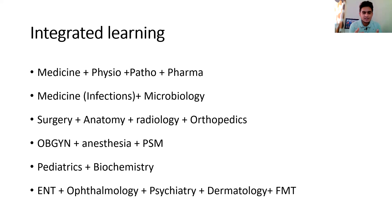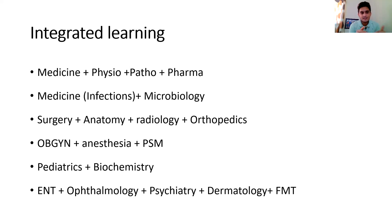Some subjects don't complement each other but are grouped together. One group is Obstetrics and Gynecology combined with Anesthesia, and Preventive and Social Medicine with Public Health. Another group combines Pediatrics with Biochemistry — this may seem like a weird combination, but there is a good overlap between metabolic and genetic diseases in Pediatrics and Biochemistry. Genetics also has an important role in Pediatrics. The last group — ENT, Ophthalmology, Psychiatry, Dermatology, and FMT — can be taken care of at the end.